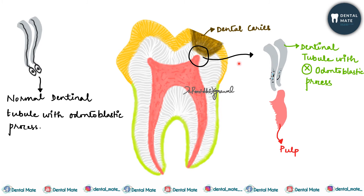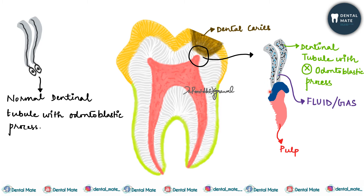This tubule then gets filled with fluid or gas. The pulp lays down an impermeable barrier of reparative dentine to protect itself from contact with the dentinal tubules. Thus the dentinal tubules are sealed at the pulpal end and are filled with fluid or gaseous substances.